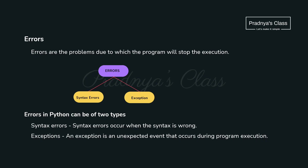First of all, let's try to understand what is an exception. Exception is nothing but an error. When we execute the program, problems will occur and the execution will stop. There are two types of errors: the first is syntax error and the second one is exception, also called a logical error.